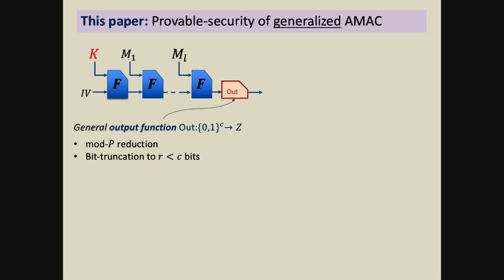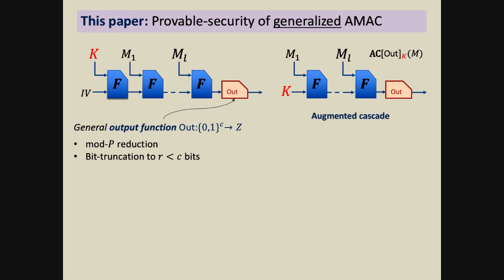We want to know for which constructions the construction is secure. This function could be reduction mod p, but could, for example, be simple bit truncation that keeps the first r bits of the state. We also study a related and simpler to analyze construction, which we call the augmented cascade construction, which is different in that the keying proceeds through the initialization value and not through prepending to the message.